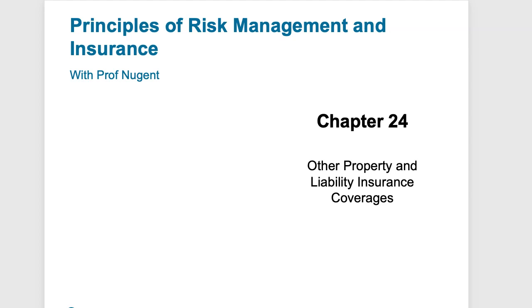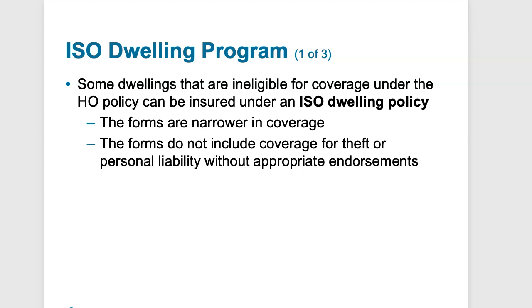The ISO dwelling program. Some dwellings are ineligible for coverage under the homeowner's policy, so in these occasions you can get insured under the ISO dwelling policy. Although a majority of homeowners use a homeowner's policy, certain dwellings are ineligible. For example, if the home is rented out to a tenant, the property is ineligible because the homeowner needs to live inside the home. Some property owners may want a less costly option, so most of these homes can be insured under a dwelling policy drafted by the Insurance Service Office.